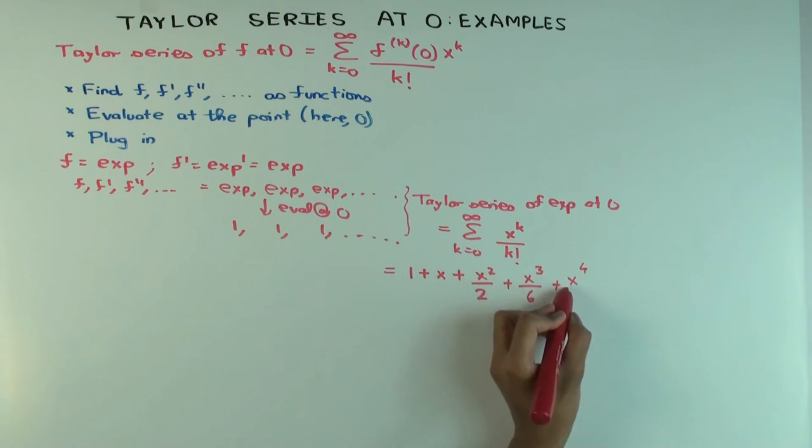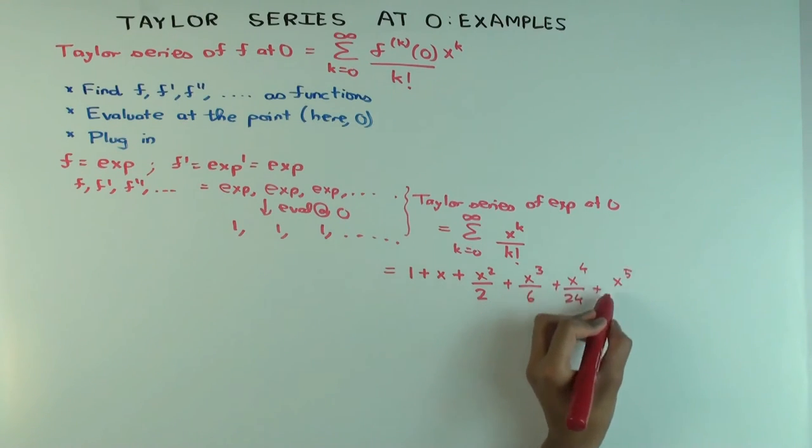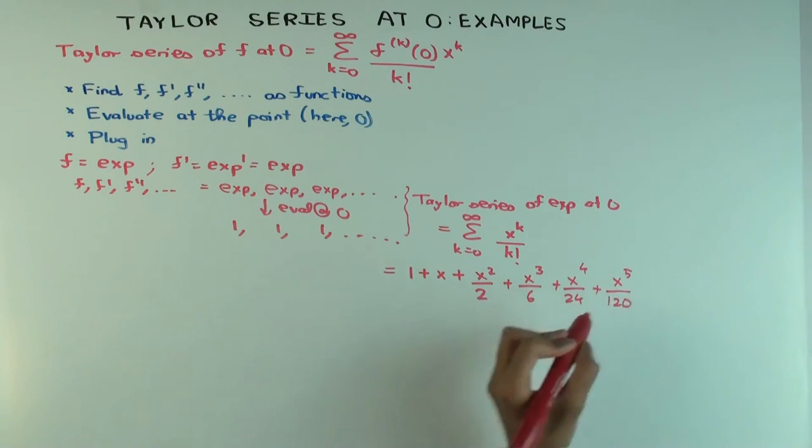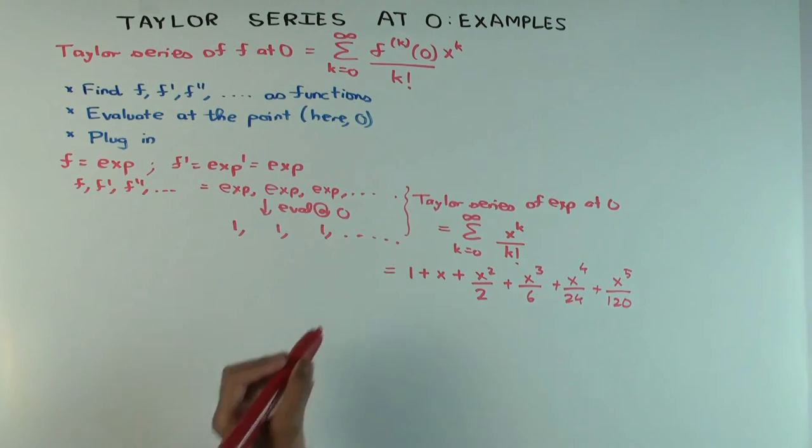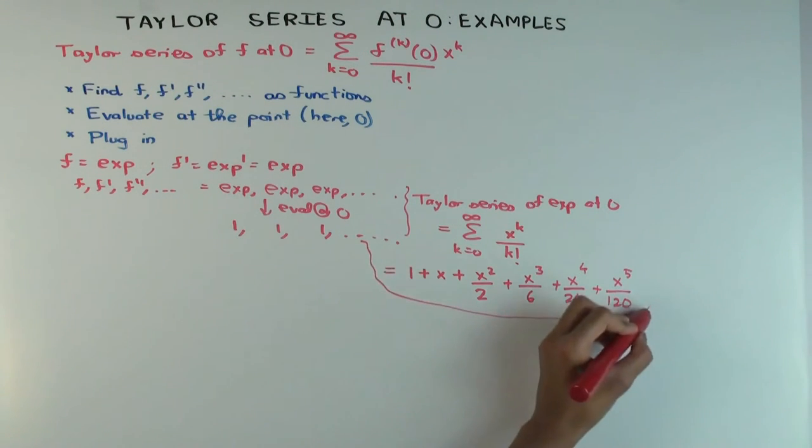X to the four over four factorial, which is 24. What's five factorial? 120. So we got the exponential function.